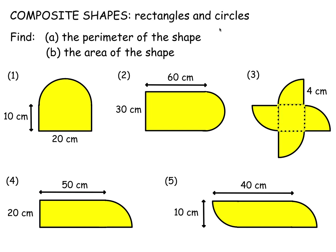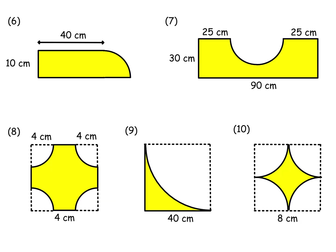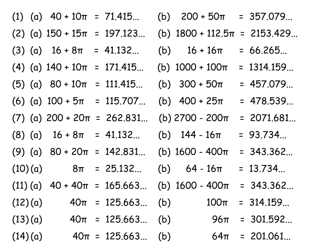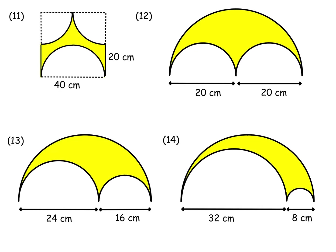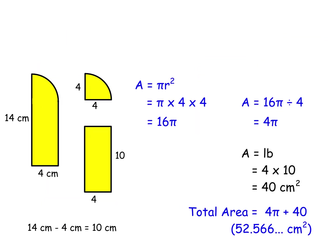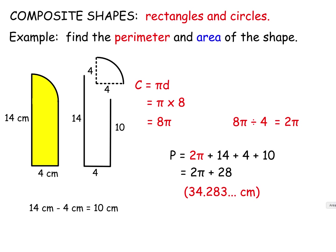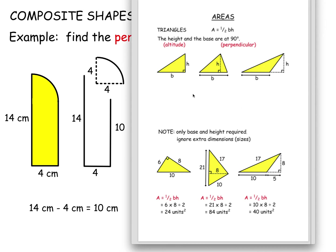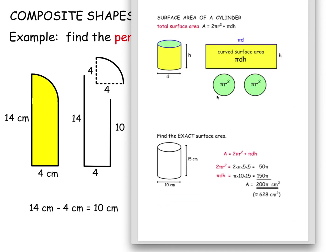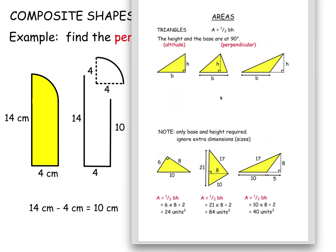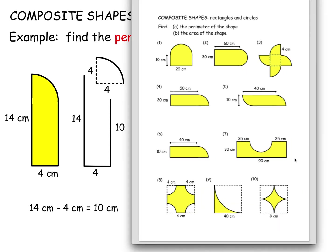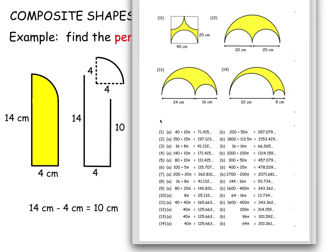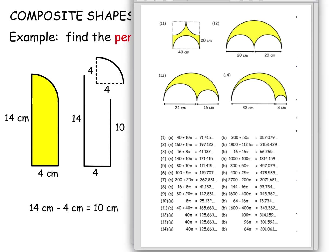The worksheet will give you lots of examples like that — asking for both the perimeter and the area — and it will have the answers at the end, written in terms of pi and as a decimal so you can check your answers. Click the link in the description for the worksheet and also for all the notes for the whole area series. The next video will be on sectors of circles.